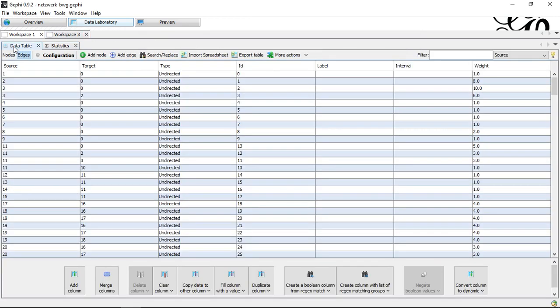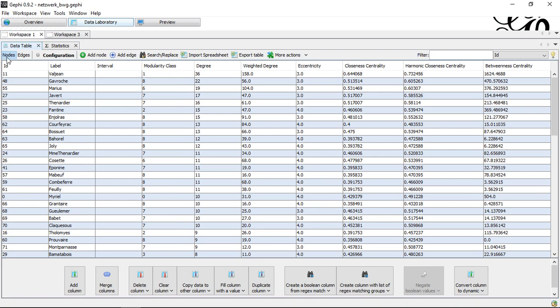If you turn to the data table in the nodes view, you get the closeness here in the third column from the right. Usually you get all four values: eccentricity, closeness, harmonic closeness, and betweenness. The closeness is in this part here.